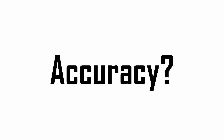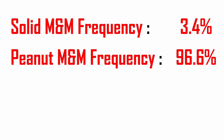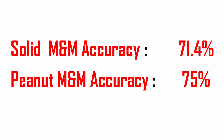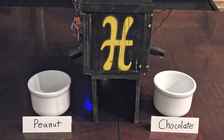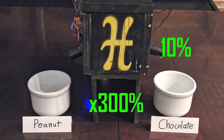You might be wondering how accurate this contraption is. Here are the statistics I've generated from running about 200 scans. Based on my sampling, solid chocolate peanut M&Ms comprise about 3.4% of all peanut M&Ms, which means there's about 1 solid candy for every 29 peanut candies. Solid chocolate M&Ms are sorted into the correct bowl 71.4% of the time, and peanut M&Ms are sorted correctly 75% of the time. What this boils down to is that solid chocolate M&Ms will comprise about 10% of the chocolate bowl — almost 300% of what it was prior to sorting.